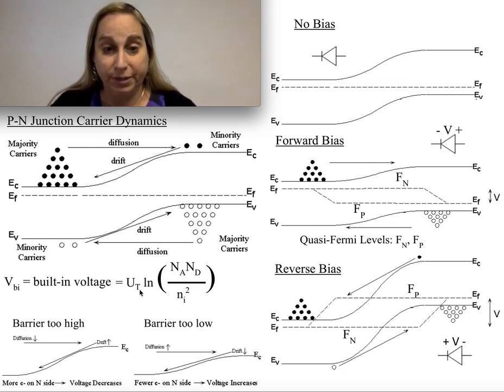There's another way to frame it, which is going to be U_T times these elements in the ratio. Notice that that would be N_D over what is the number of carriers on the P-side, which is going to be N_A over N_I squared. This gives you the sense of the built-in potential.